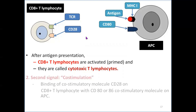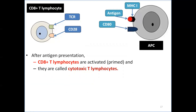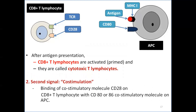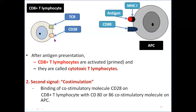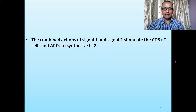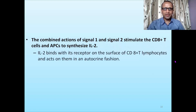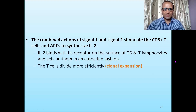After activation, CD8-positive T-lymphocytes are known as cytotoxic lymphocytes. The second signal is provided by co-stimulation: binding of the CD80 molecule on the surface of the APC with the CD28 co-stimulatory molecule on the surface of the CD8-positive T-lymphocyte. Signal 1 and signal 2 stimulate CD8-positive T-lymphocytes and antigen-presenting cells to synthesize the cytokine interleukin-2. Interleukin-2 stimulates CD8-positive T-lymphocytes to divide rapidly, resulting in significant clonal expansion.